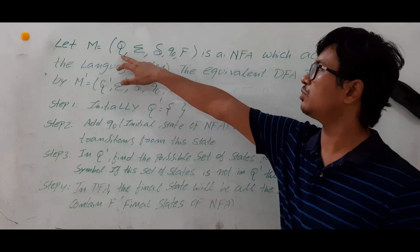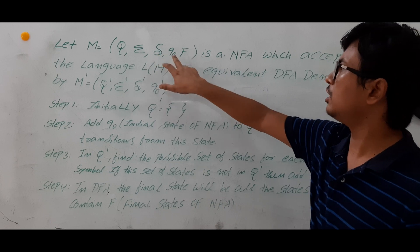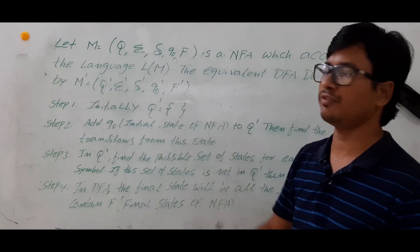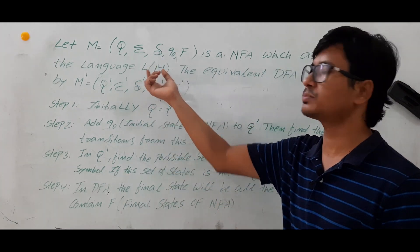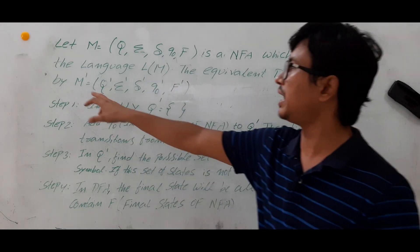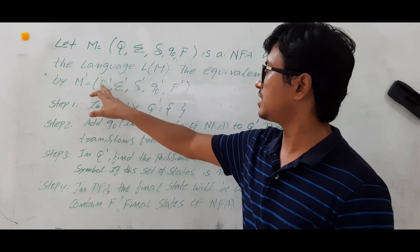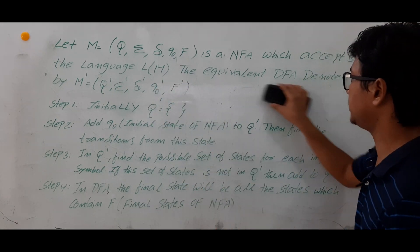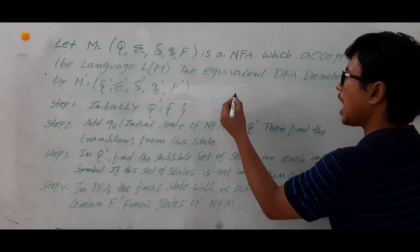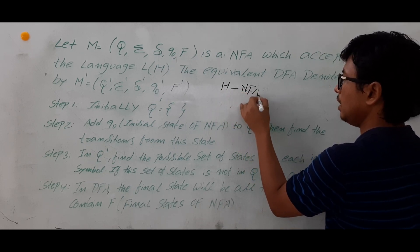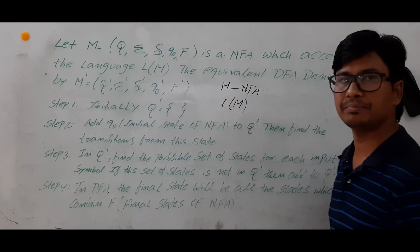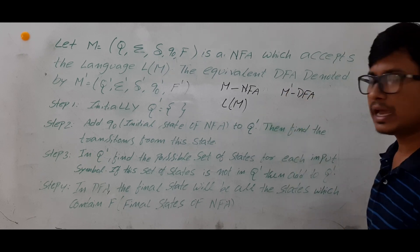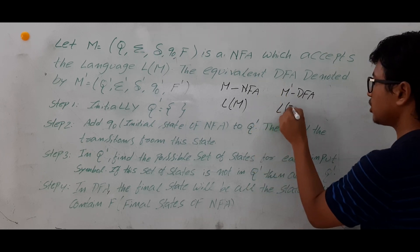Let M = (Q, Σ, δ, Q0, F) be an NFA which accepts the language L(M). The equivalent DFA is denoted by M', which has components (Q', Σ', δ', Q0', F'). So you have an NFA machine M that accepts language L(M), and you have an equivalent DFA machine M' that accepts language L(M').